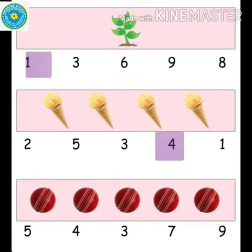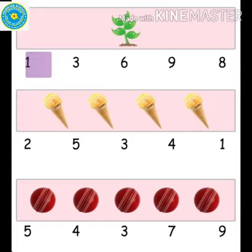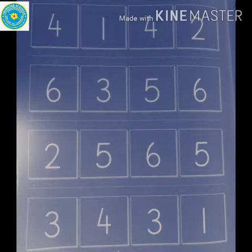Next comes the last row. How many balls are there? One, two, three, four, five. So how many balls are there? Five balls. Are you able to identify number five? Yes, then color it. Children, next we are going to color the squares with the same numbers in each row.